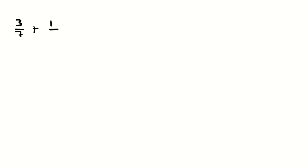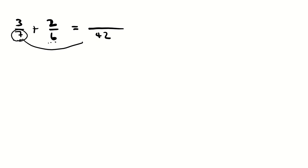Now let's consider a case where the bases are not the same. Imagine you're given 3 over 7 plus 2 over 6. If the bases are not the same, what you need to do is multiply the denominators. So 7 and 6 are the denominators — because they are not the same, you multiply them: 7 times 6 is equal to 42.